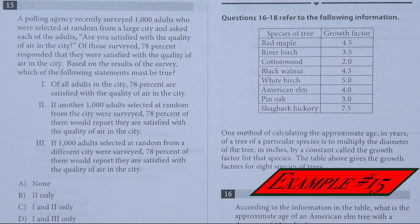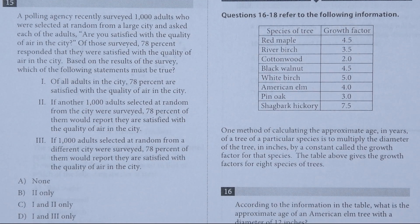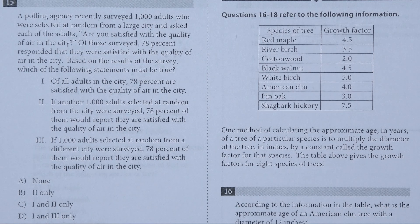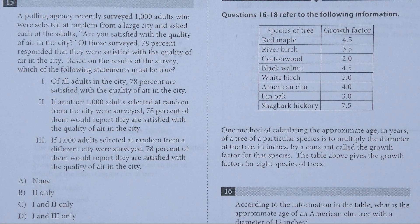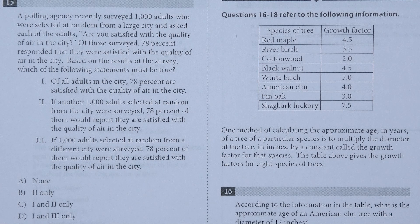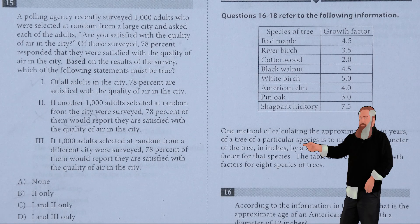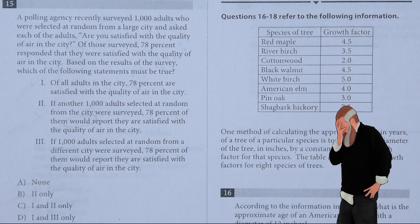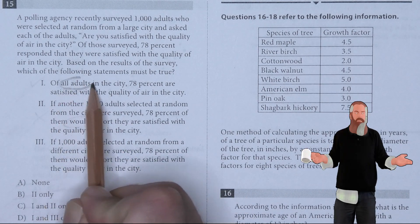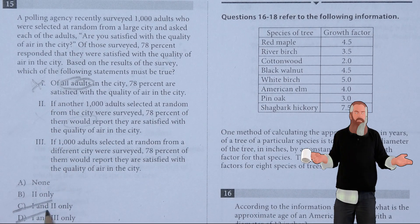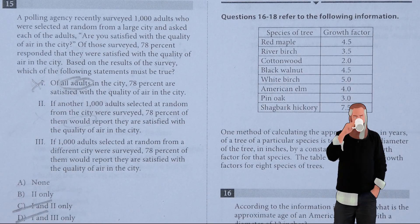A polling agency recently surveyed 1,000 adults selected at random from a large city and asked: are you satisfied with the quality of air in the city? Of those surveyed, 78% responded they were satisfied. Based on the survey results, which statement must be true? Of all adults in the city, 78% are satisfied with air quality. It says all adults, and they only surveyed 1,000, so this is not true, meaning if it contains a one, it can't be an answer.